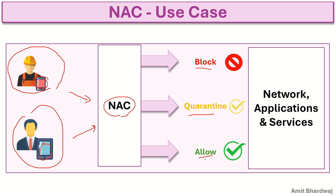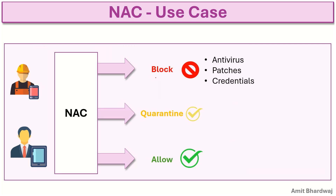The first permission type is blocking. The block permission prevents unauthorized or non-compliant devices from entering the network. Triggers include outdated antivirus, missing patches in the system, or the user or device having failed the credential test. All these things can result in blocking of that device or traffic.